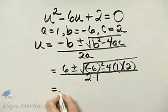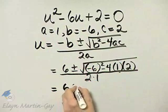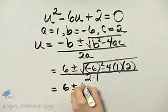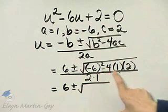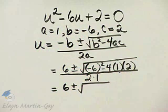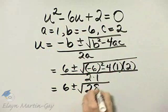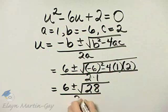So now we just need to simplify. That's 6 plus or minus the square root of, now be very careful, that's 36 minus 8, and 36 minus 8 is 28, all over 2.